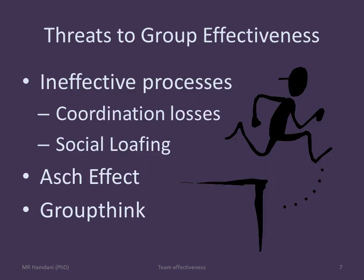Just to recap, we talked about various issues in group settings that can reduce the effectiveness of teamwork. We talked about production problems, motivational problems, social loafing, the Asch effect, and groupthink. We also discussed some mechanisms that can remediate the situation. Hopefully these will guide your teamwork effectiveness in future. With this, we end our discussion. Thank you for listening.